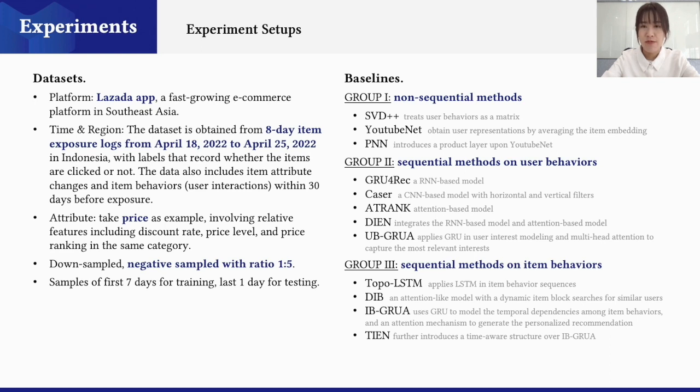Three groups of competitive baselines are considered. Group 1 are non-sequential methods without individual behavior modeling, which includes SVD++, YouTubeNet, and PNN. Group 2 are sequential methods on user behaviors, which includes RNN, CNN attention-based models and their combinations. Group 3 are sequential methods on item behaviors, which also includes RNN and attention-based methods, where TIEN is proposed with an additional time-aware structure, which also considers the timestamp of item behaviors.